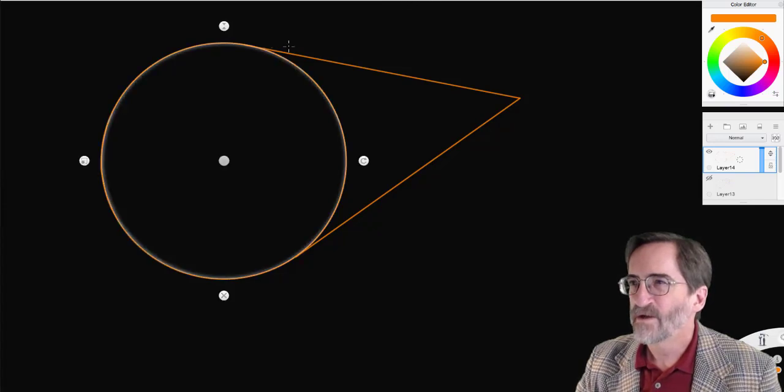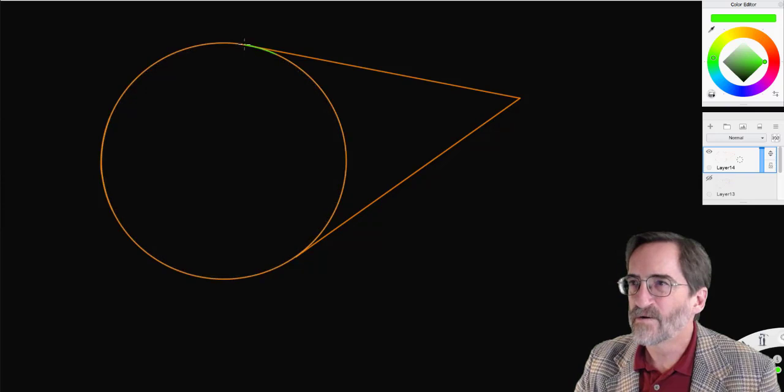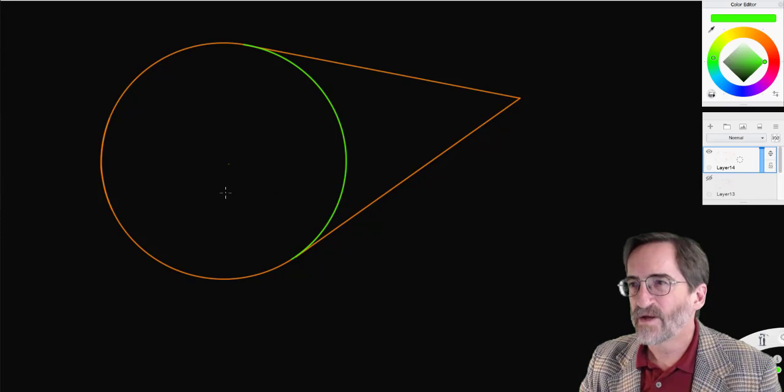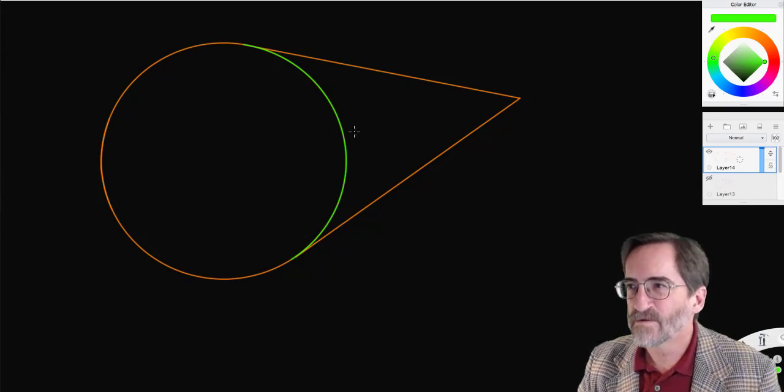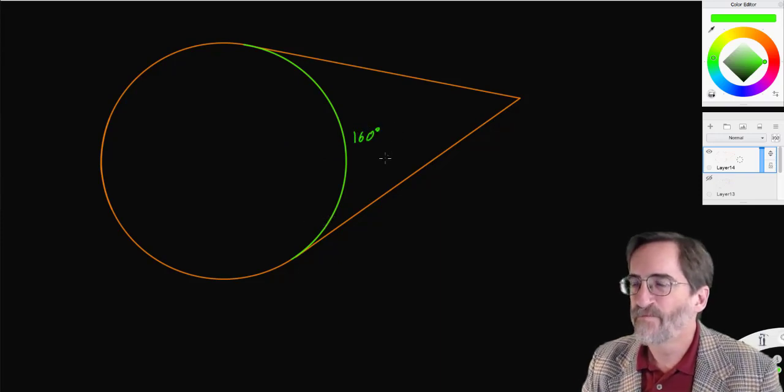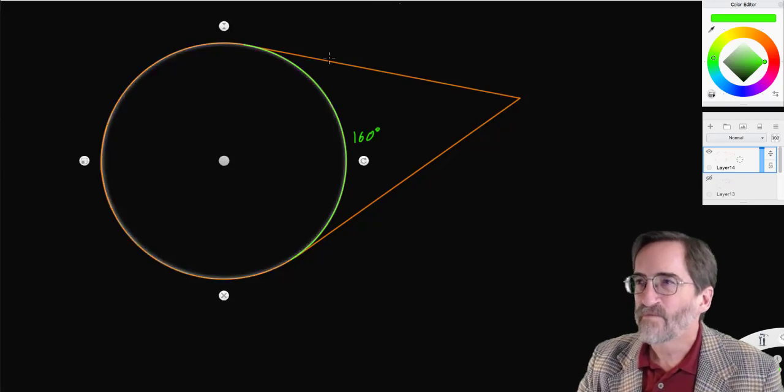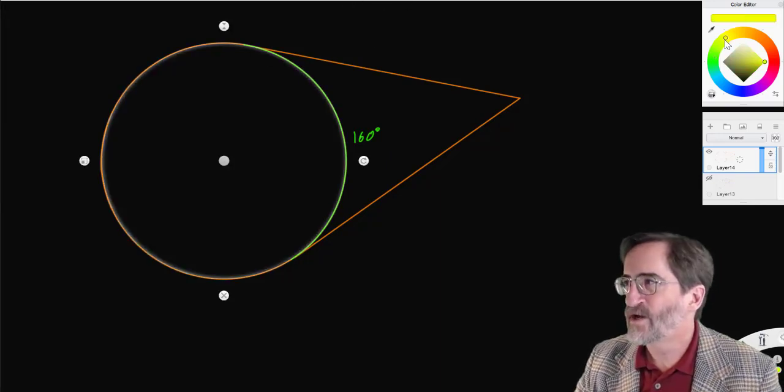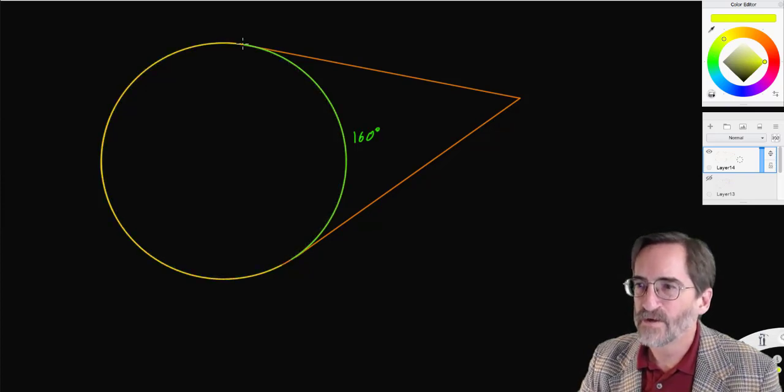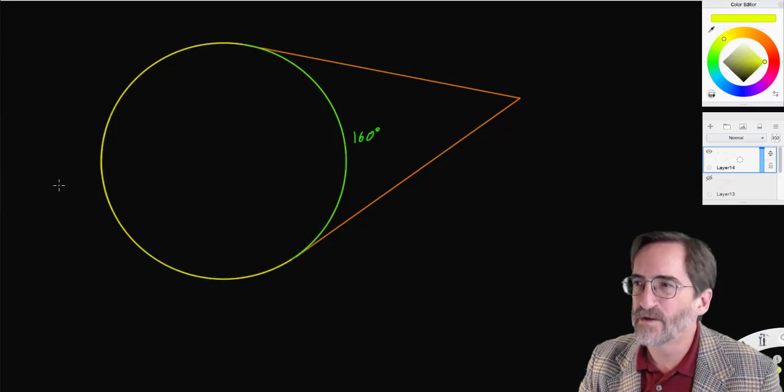We've got this intercepted arc right here. And let's say that is 160 degrees. We can automatically find the outside intercepted arc, because the full circle's arc is 360. So 360 less 160 means the outside arc is 200 degrees.